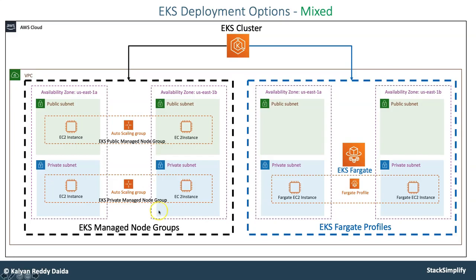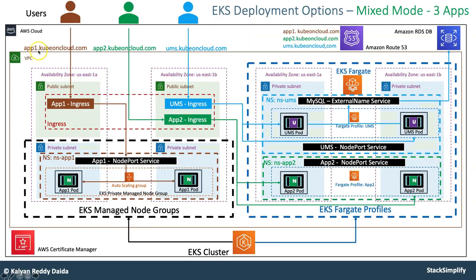In Fargate serverless, we will run our workloads in a mixed mode — running a few workloads on regular managed node groups with EC2 instances and also running Kubernetes pods on Fargate. We are going to implement this with three applications: App1, App2, and UMS. App1 runs on EKS managed node groups and UMS and App2 run on EKS Fargate profiles.